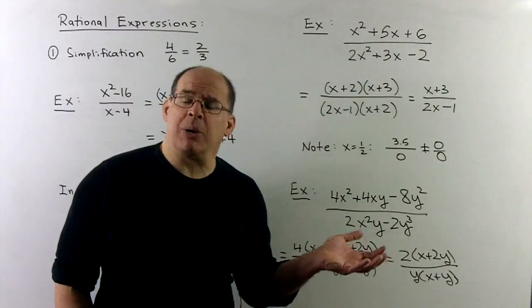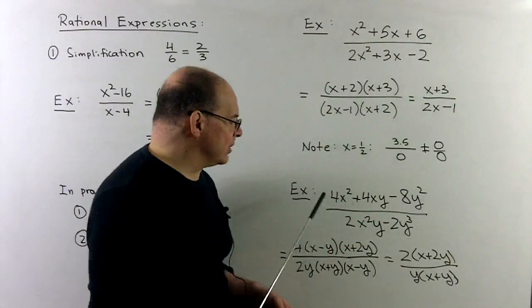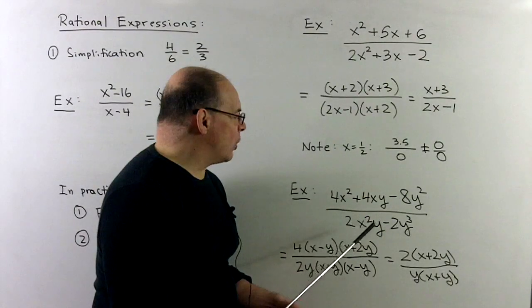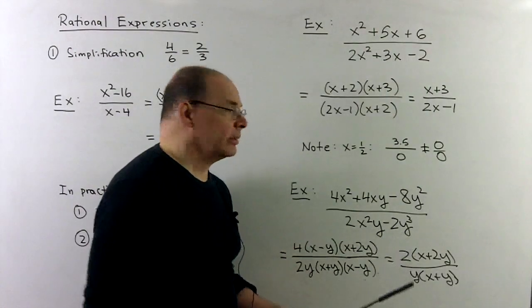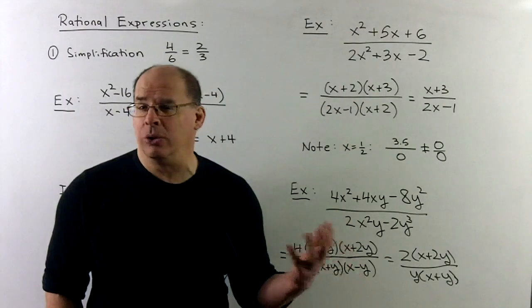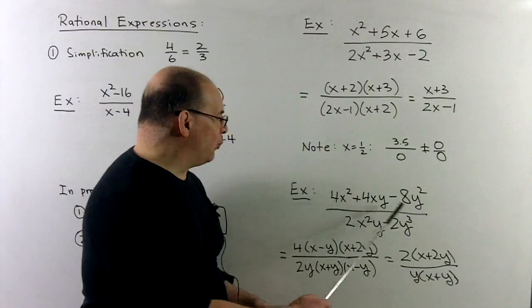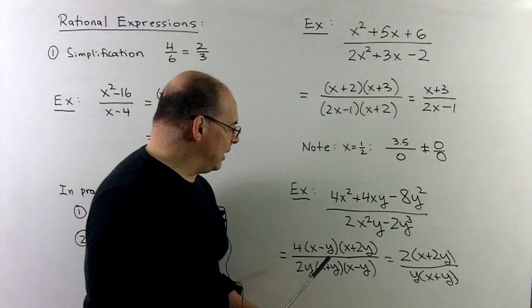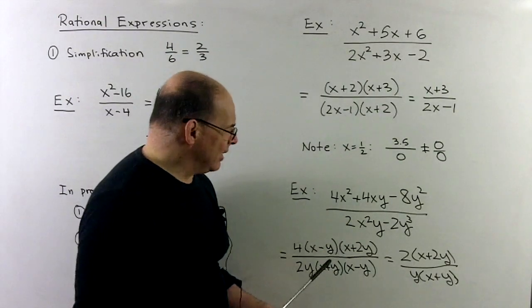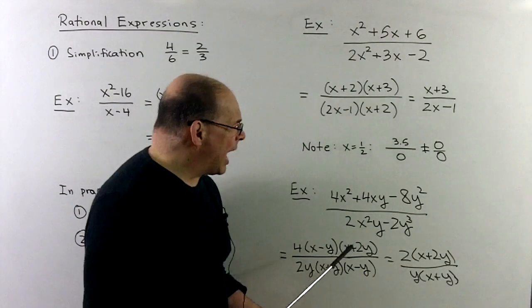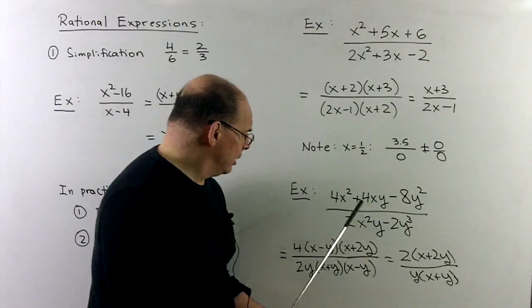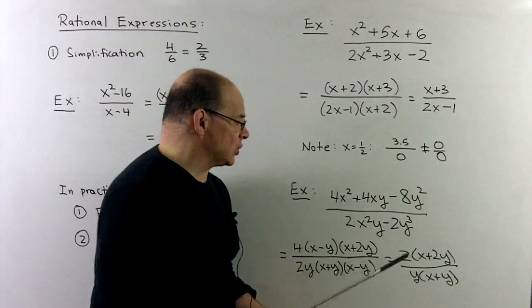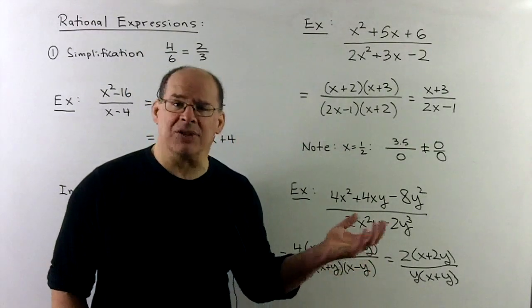Note, rational expressions, we can have several variables. So, for instance, I could look at something like this. 4x squared plus 4xy minus 8y squared over 2x squared y minus 2y cubed. Of course, with the factoring, we look for greatest common factors in the numerator and denominator. So, there we can pull out a 4 and a 2y. And then, with what's left over, those will factor nicely. So, in the numerator, we'll have an x minus y, x plus 2y. In the denominator, we'll have an x plus y, x minus y, where we see the difference of two squares. So, the x minus y's are going to cancel, and we're left with 2x plus 2y over y, x plus y. And there's nothing to cancel there, so that's going to be our reduced expression.